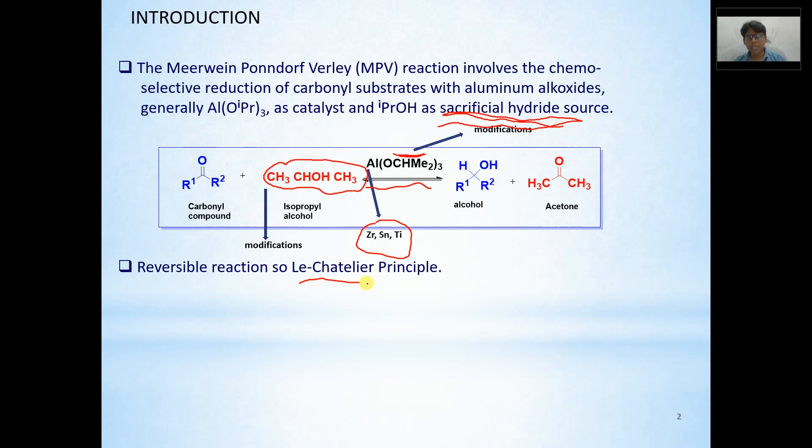What does it mean? If the reaction is reversible and if out of the products, any of the products is removed by any of the means, then reaction proceeds in the forward direction. Here also, same thing happens. If acetone is removed by distillation, the reaction moves further forward direction and we get more yield of this alcoholic product.